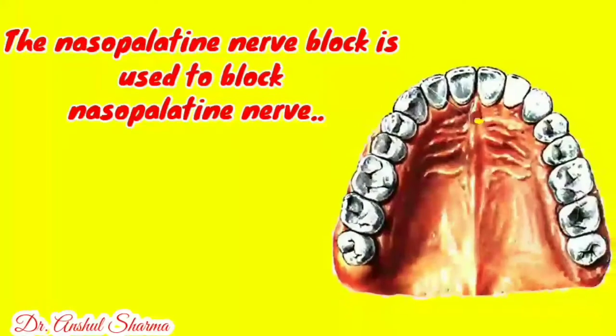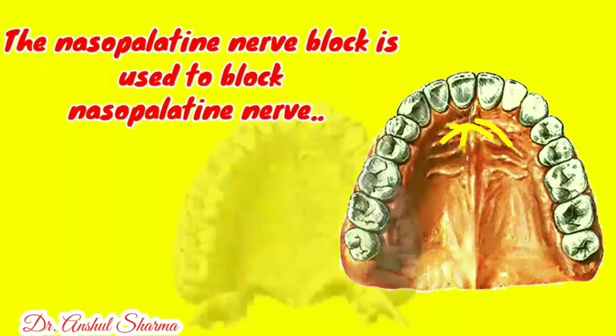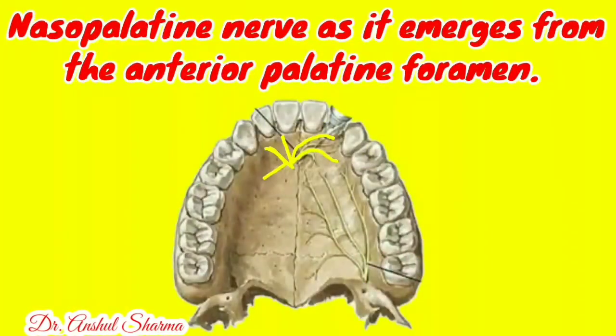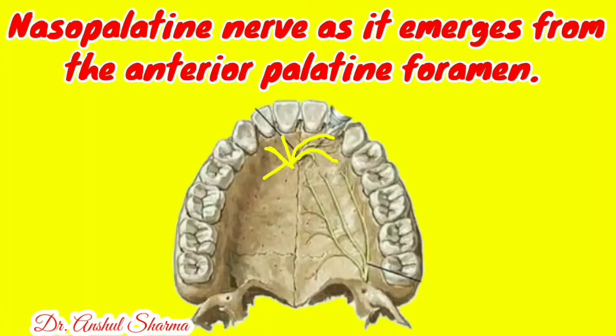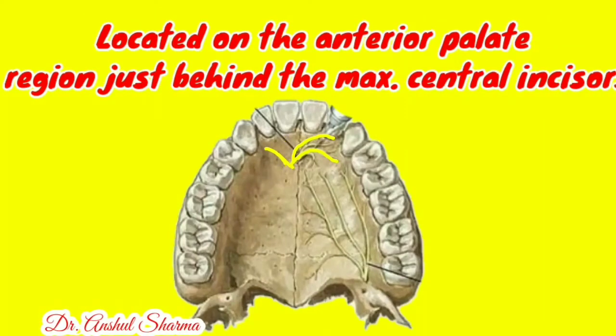The nasopalatine nerve block is used to block the nasopalatine nerve as it emerges from the anterior palatine foramen, located on the anterior palate region just behind the central incisors.